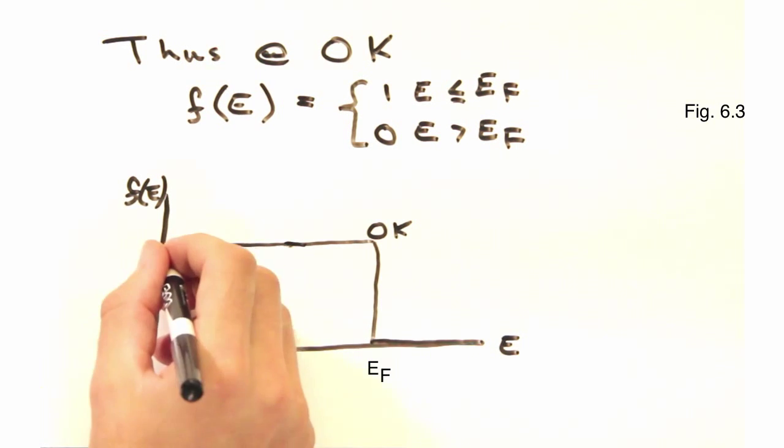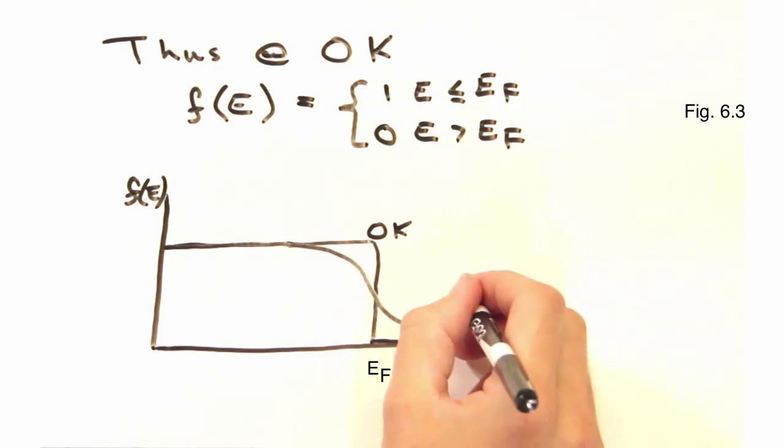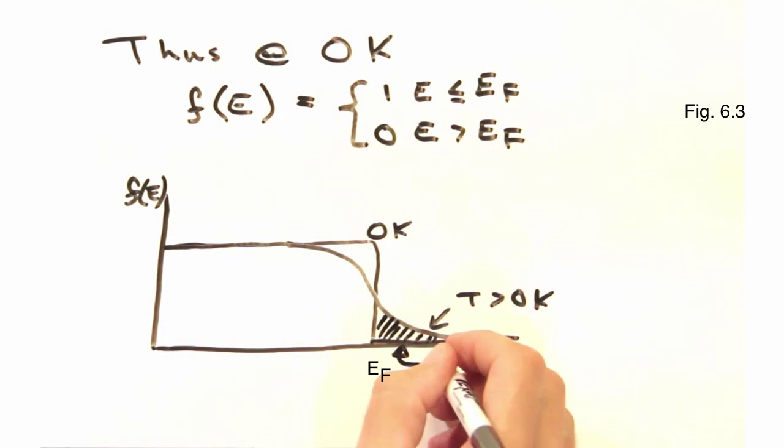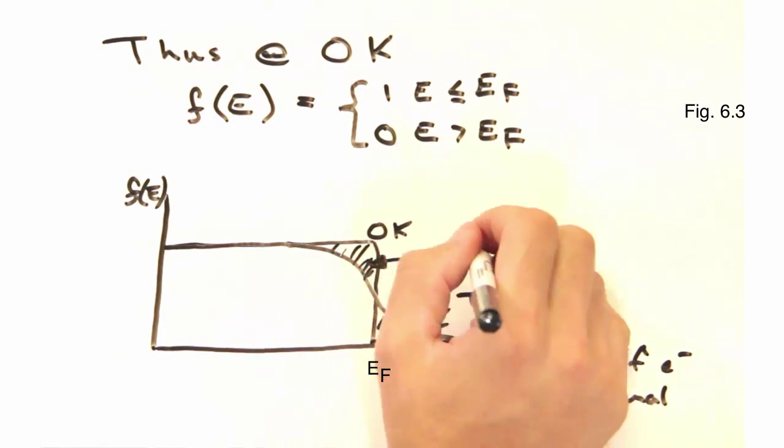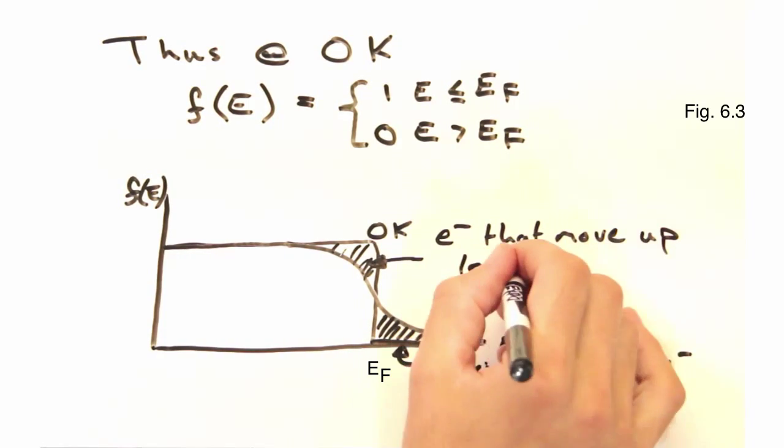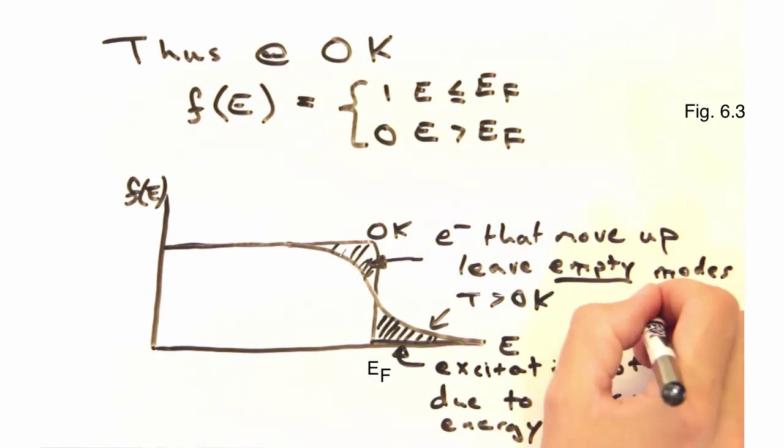As we go up in temperature, we start to see a smearing of this line. And that represents electrons moving up in energy due to thermal fluctuation. Since we have to conserve the total number of electrons, the electrons that move up leave unoccupied modes at lower energies.